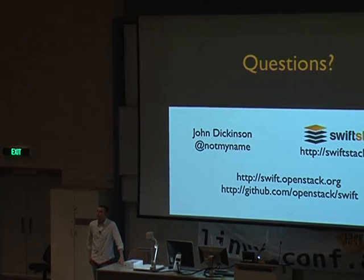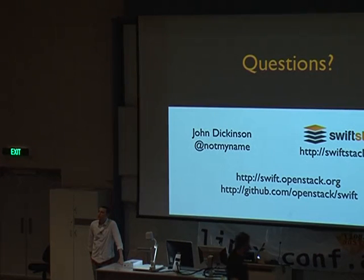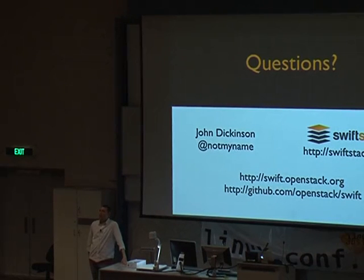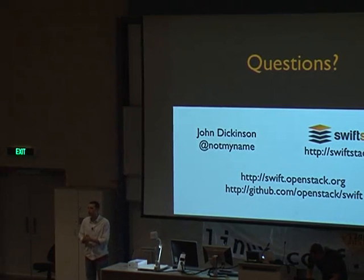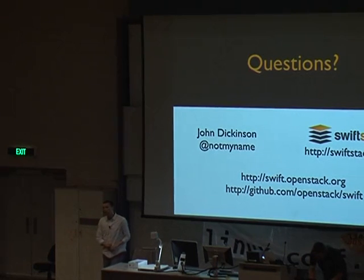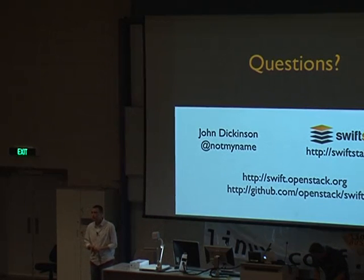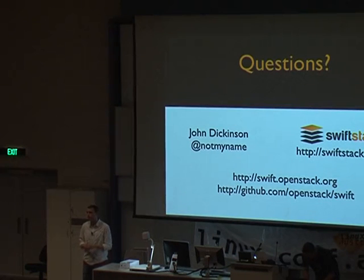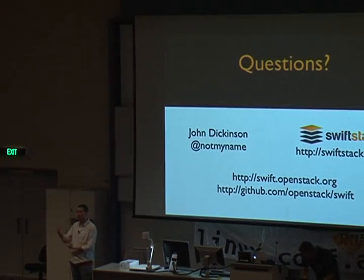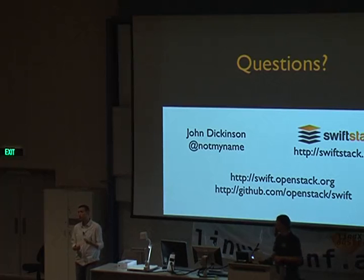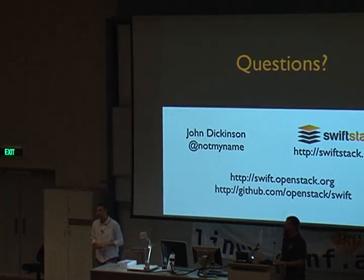[Question: Object-level ACLs — are they on the roadmap?] ACL support is somewhat specific to the auth system you're using, which is quite pluggable within the system. Generally, we try to keep things like ACLs grouped at the container level so you have container-level ACLs. The reason being it's a lot easier to scale several hundred thousand containers rather than several billion objects — the overhead metadata gets large when dealing with that. All the auth systems I know about implement ACLs on a per-container basis.